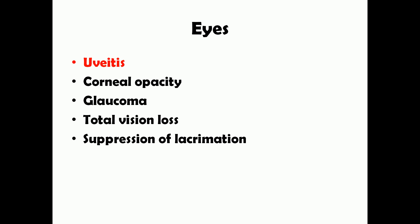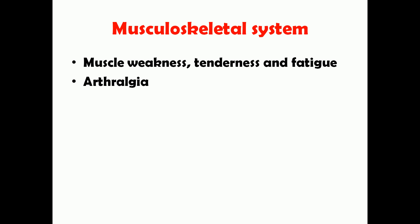The musculoskeletal system is also involved in some patients, causing muscle weakness, tenderness, and fatigue. This is usually not the presenting complaint — most patients present with respiratory symptoms, skin lesions, or eye problems — but history-taking can bring it to light. Arthralgia, pain of the joints, can occur, and bones may be involved, most commonly the phalanges of the hands and feet.